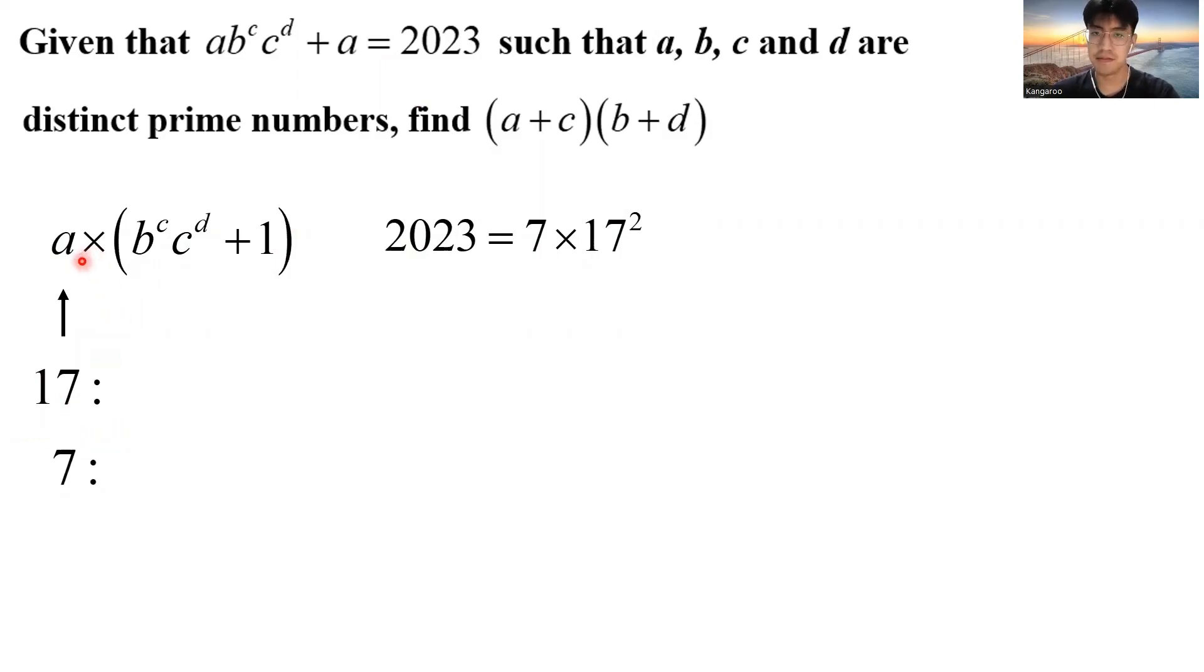If a is 17, it means that b to the power of c times c to the power of d plus 1 should be 7 times another 17, which can be expressed as this. And if I do the prime factorization for this, I will get 2 times 59, which is not possible because I can't express 2 and 59 with b, c, and d. So now let us check the value 7.